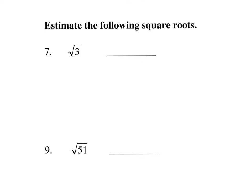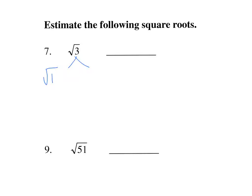Now we'll estimate the following square roots. We're going to identify what two perfect squares a value falls between. The square root of 3 is between the square root of 1 and the square root of 4. The square root of 1 is 1, the square root of 4 is 2. So the square root of 3 must be somewhere between 1 and 2, and it's closer to 4 than to 1, so it's probably closer to 2 — approximately 1.8.